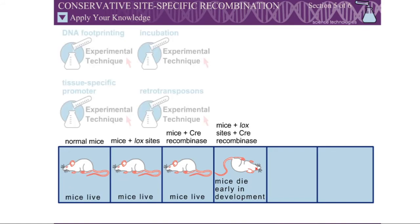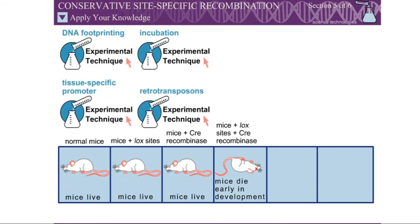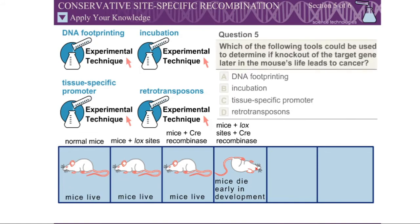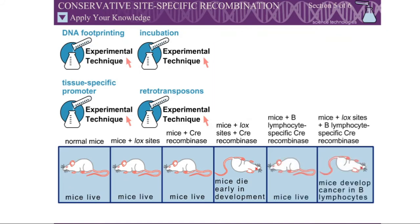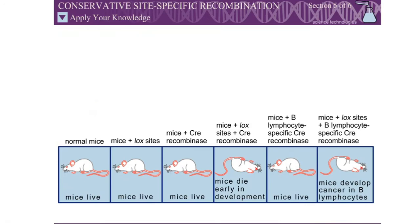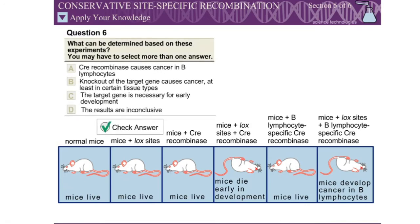Question 5: Which of the following tools could be used to determine if knockout of the target gene later in the mouse's life leads to cancer? Question 6: What can be determined based on these experiments?